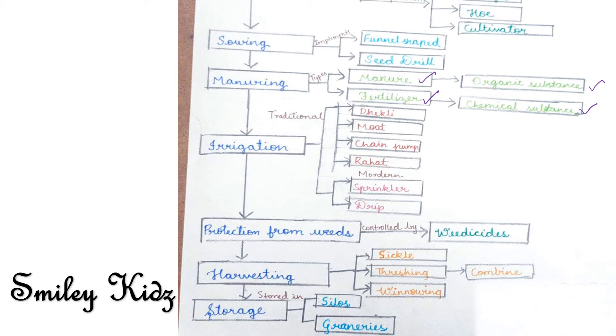Farmers are encouraged to prefer manure than fertilizers because manure enhances the water holding capacity of the soil. It makes the soil porous, due to which exchange of gases becomes easy. It increases the number of friendly microbes and improves the texture of the soil.